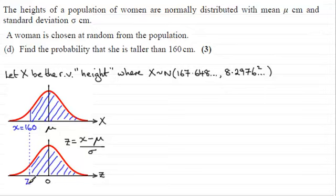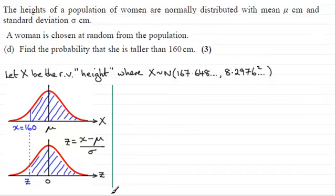We'll call that Z. Z is always connected to any observed value through this transformation: Z equals x minus the mean mu, all divided by the standard deviation sigma. Using that, we should be able to work out the corresponding Z value.